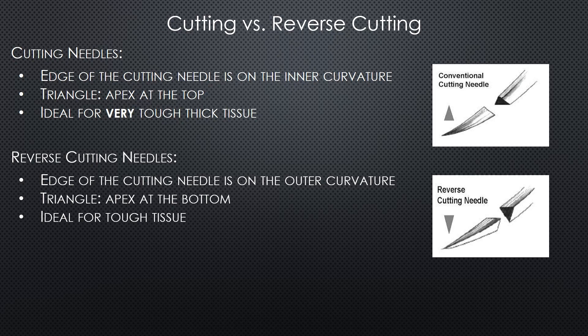The design of this needle is ideal for tough tissue such as skin — it's perfect for skin, fascia, and some tendons and ligaments. The use of this needle in the OR is popular because it causes a little less tissue trauma than the conventional cutting needle.